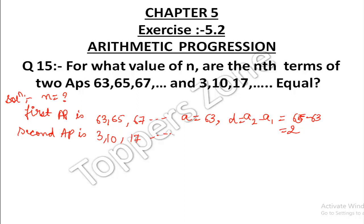From the second AP, the first term a is 3, and the common difference is 10 minus 3, which is equal to 7.